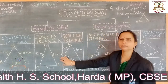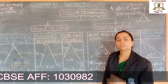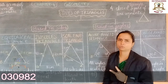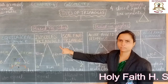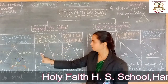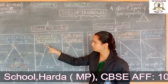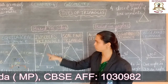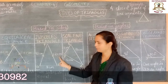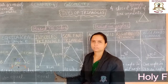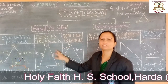Second is isosceles triangle. A triangle whose two sides are equal is called an isosceles triangle. See here, two sides are equal. Side B is equal to side P, which is equal to 12 cm. The third side is 8 cm. So this is an isosceles triangle.